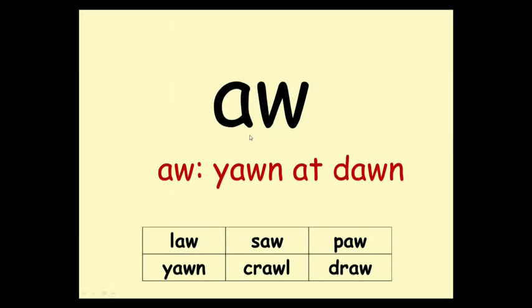This is the OO sound — OO, yon at dawn. Here are some words: lo, so, po, yon, crawl, drawl.